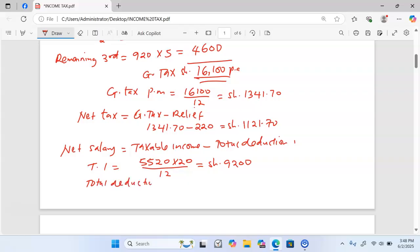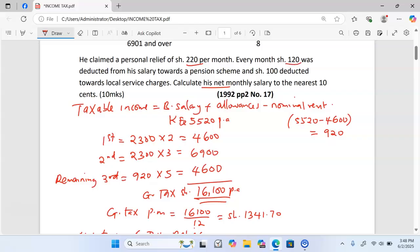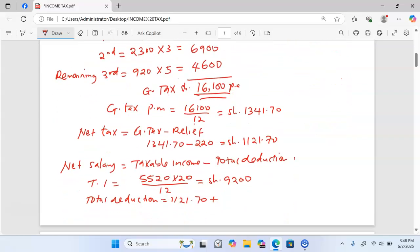Total deductions begin with the net tax of 1,121.70 plus 120 shillings for pension plus 100 shillings for local service charge. The total deductions equal 1,341.70.